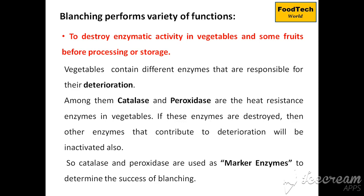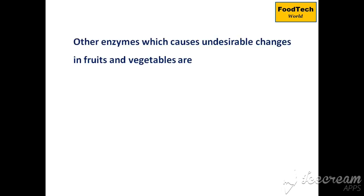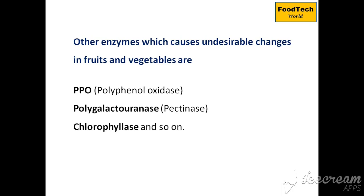Besides catalase and peroxidase, there are other enzymes that cause undesirable changes in fruits and vegetables. These include PPO (polyphenol oxidase), polygalacturonase (also known as pectinase), chlorophyllase, and others.